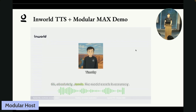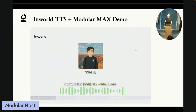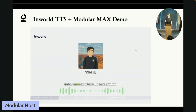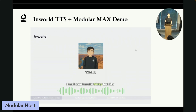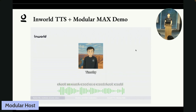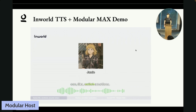The model excels in accuracy. For example, if you provide a phone number like 558-123-4567, it can recognize and format it correctly. Or if you're looking for a specific date, such as when the Declaration of Independence was signed, it'll accurately tell you it was July 4th, 1776. Plus, it can handle tricky text like tongue twisters with precision, such as 'How much wood would a woodchuck chuck if a woodchuck could chuck wood?' It's fascinating how you can switch emotions. Julia, can you show us how it works?